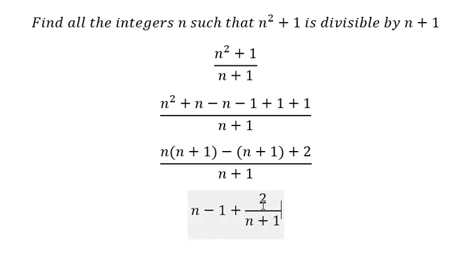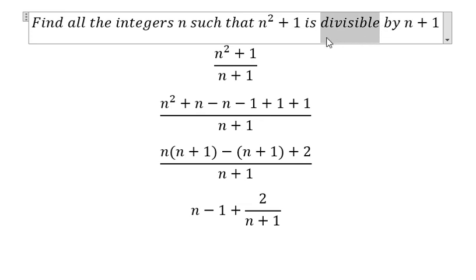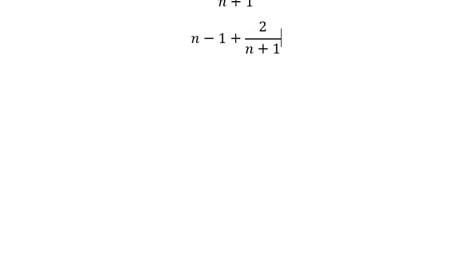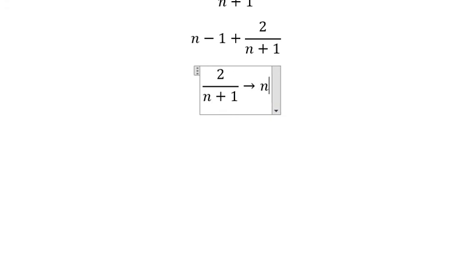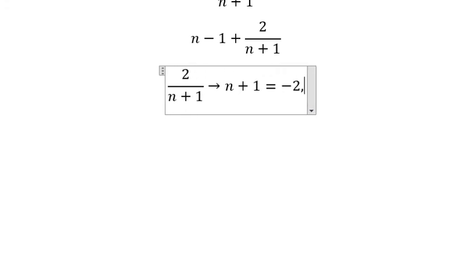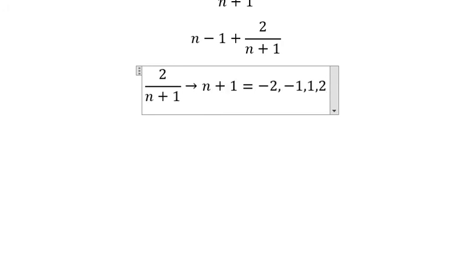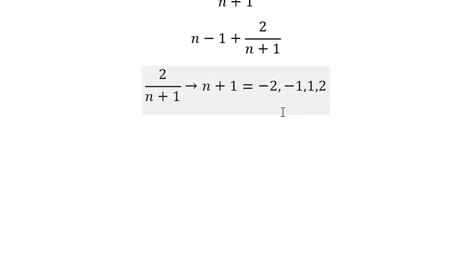Now in this situation, what we want to find is the number to make sure that this is divisible. That means 2 must be divisible by n plus 1. So n plus 1 should be negative 2, negative 1, positive 1, or positive 2 — because these are all the divisors of 2.